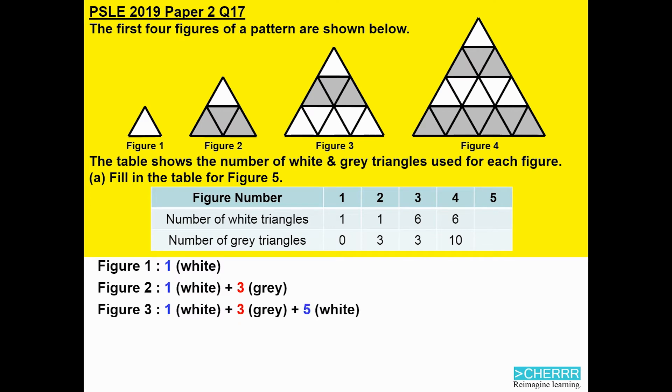In figure 3, I have 1 plus 3 plus 5, 1 for white, 3 for grey, 5 white. In figure 4, I have 1 plus 3 plus 5 plus 7, 1 white, 3 grey, 5 white, 7 grey. By now, you would have noticed a pattern.